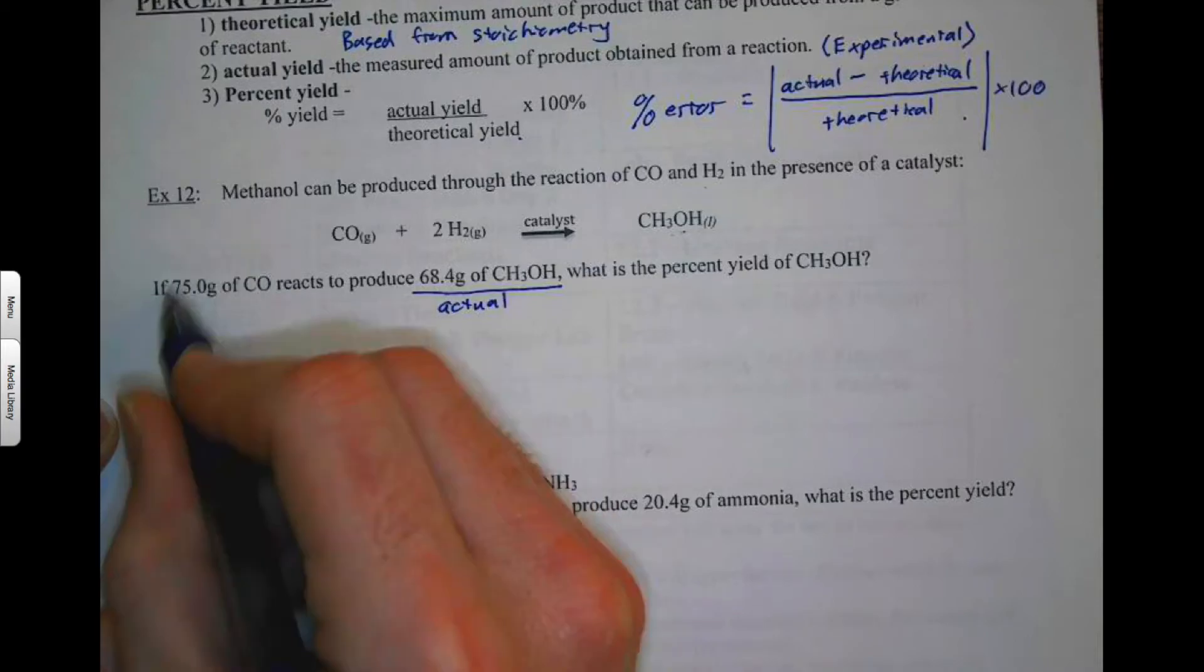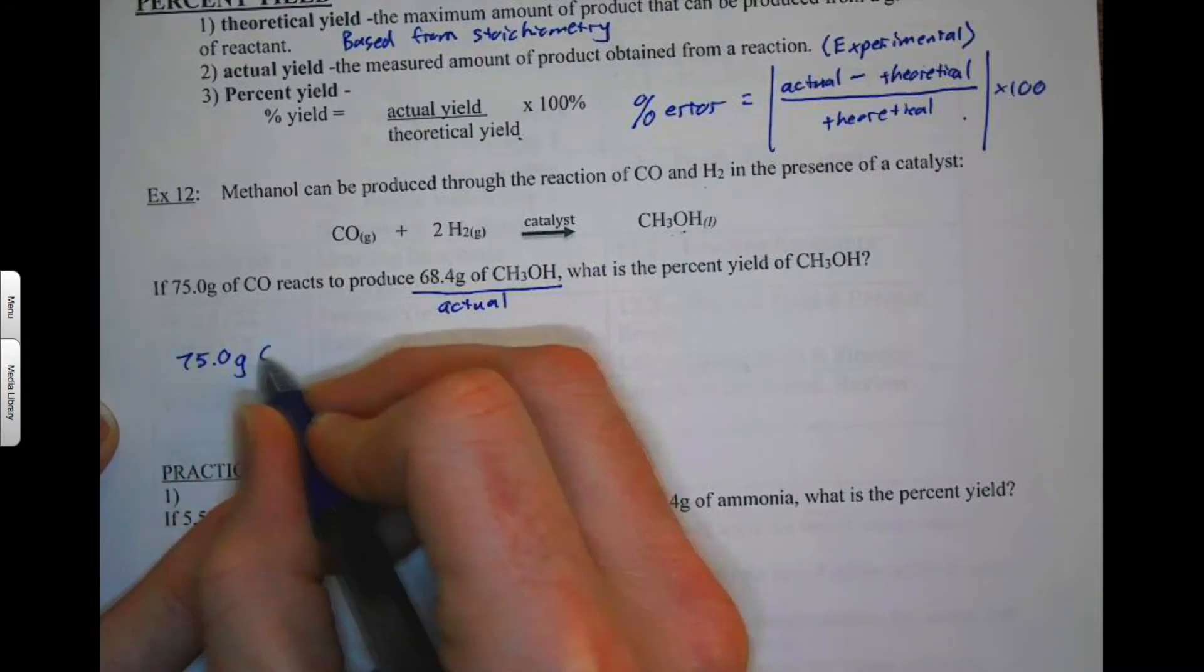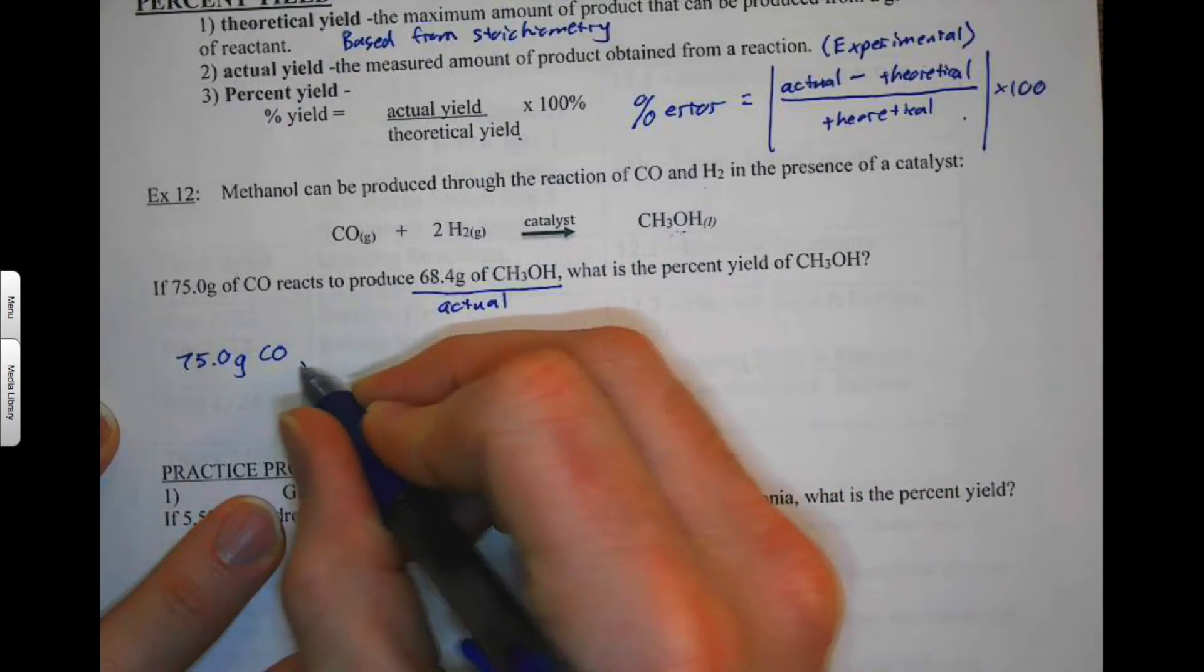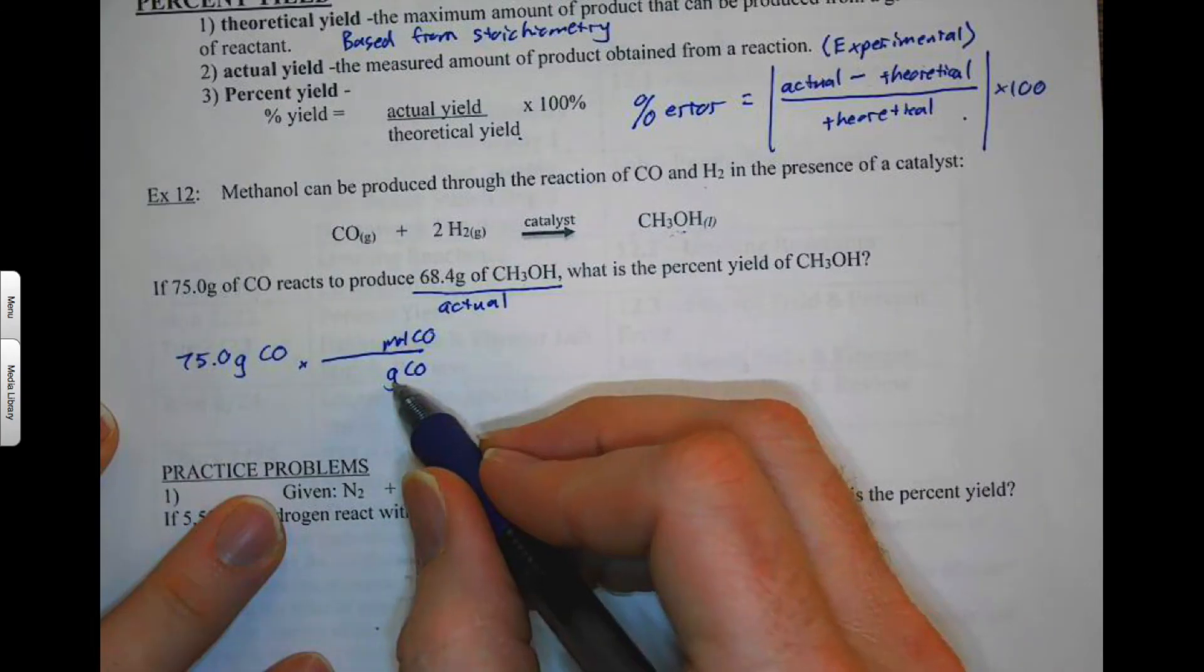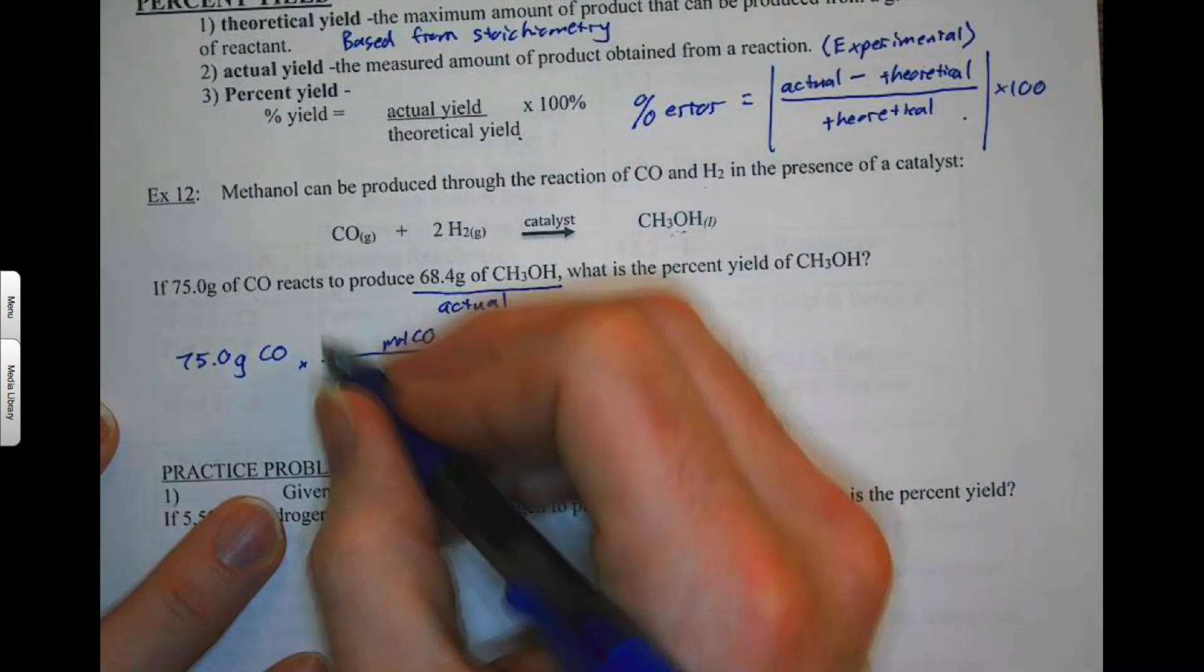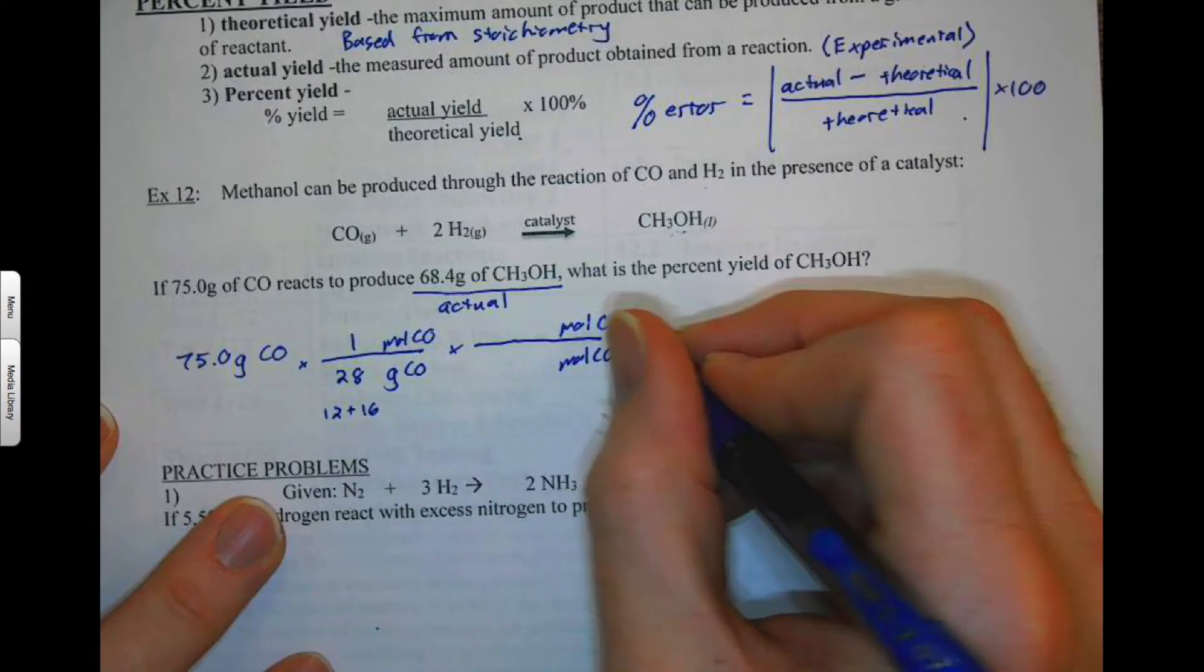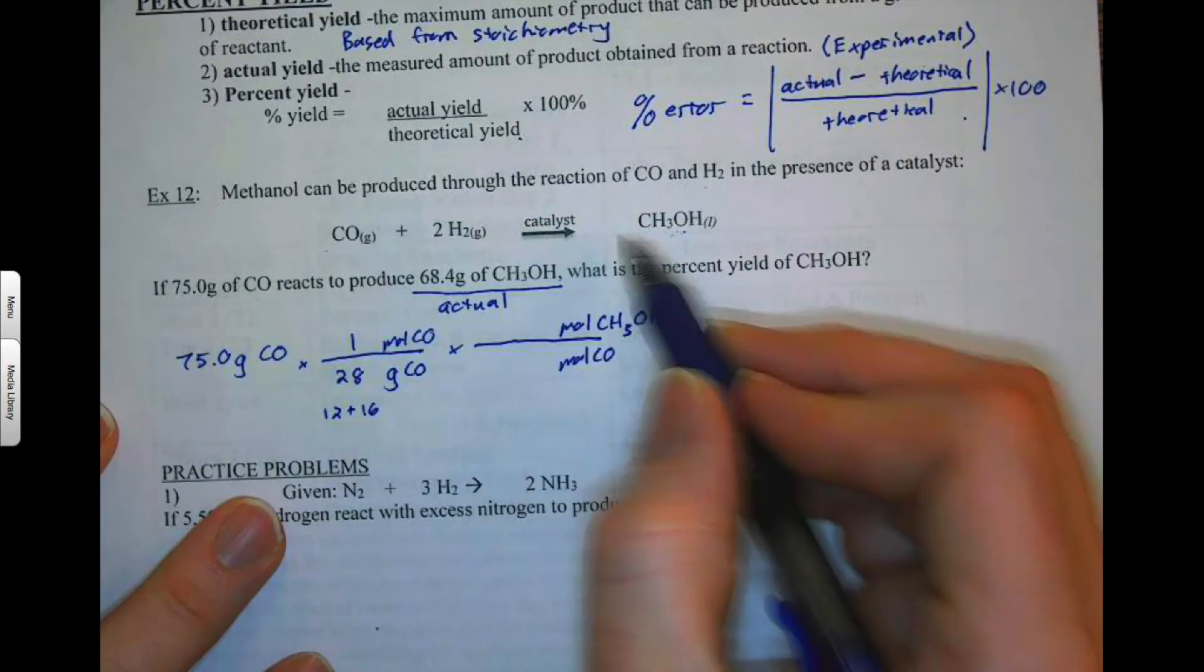Now the theoretical yield is going to be calculated from this. So we're going to start from 75.0 grams of CO, and we're going to see how much we could produce if this was 100% went all the way. So grams of CO to the moles of CO. And so we need to go to the periodic table. The molar mass for carbon is 12. The molar mass for oxygen is 16. 12 plus 16 is 28 grams per mole. And then we'll change moles of CO into moles of our methanol CH3OH. And so that's a one-to-one ratio, one-to-one.